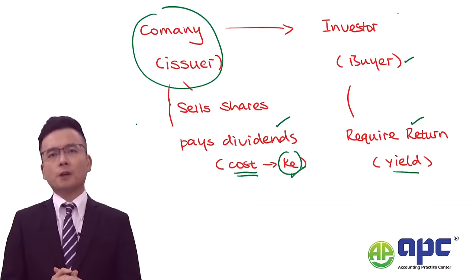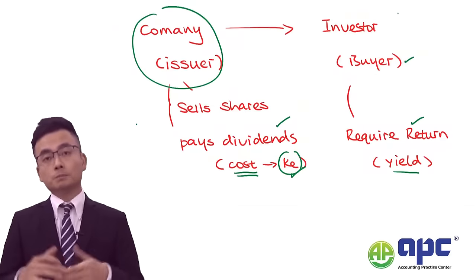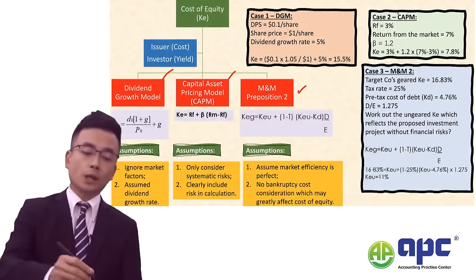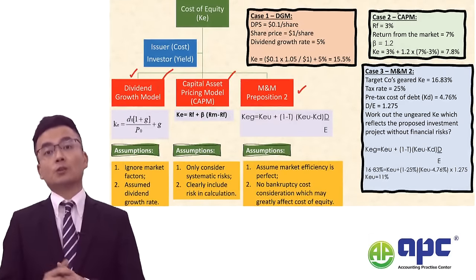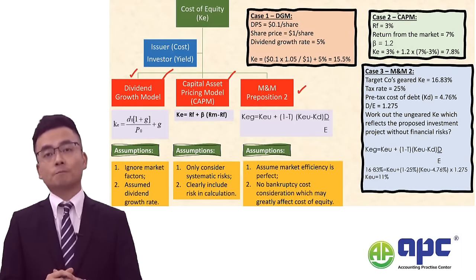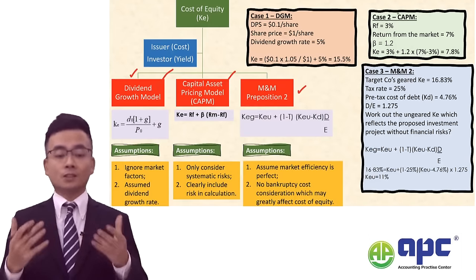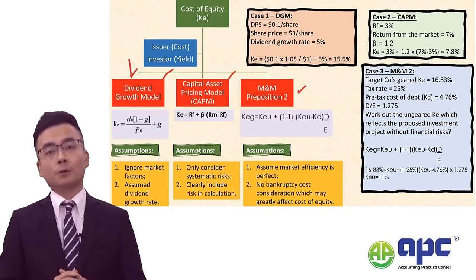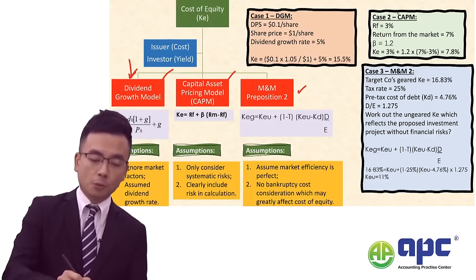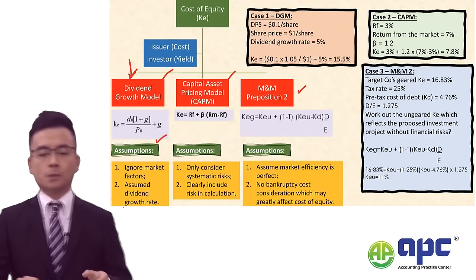Let's focus from the issuer's point of view using the dividend growth model. We are asking: what would be the cost to the business if it were to sell shares to the investor? You need to pay dividend, and this means that the dividend will be your cost — your cash outflow. Here we are given the formula. Let's see a numerical example.